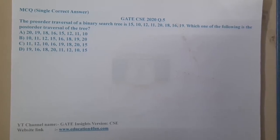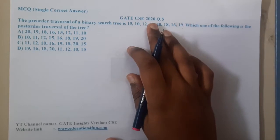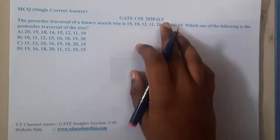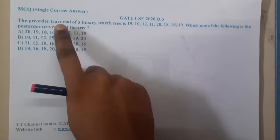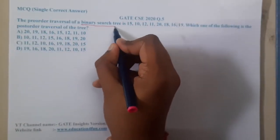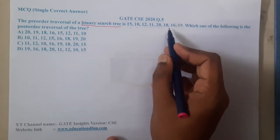Hello guys, here back to the next lecture. In this lecture, let us continue with the next question - a GATE CSE 2020 question. The preorder traversal of a binary search tree is: 15, 10, 12, 11, 20, 18, 16, 19. Which one of the following is the postorder traversal of the tree?